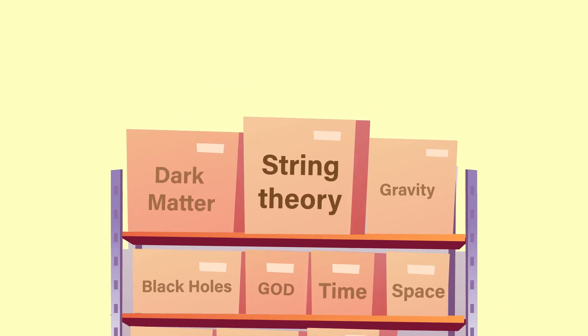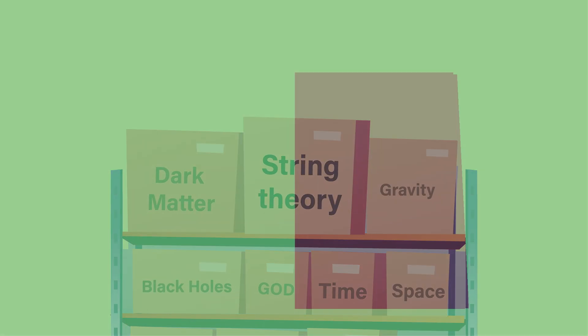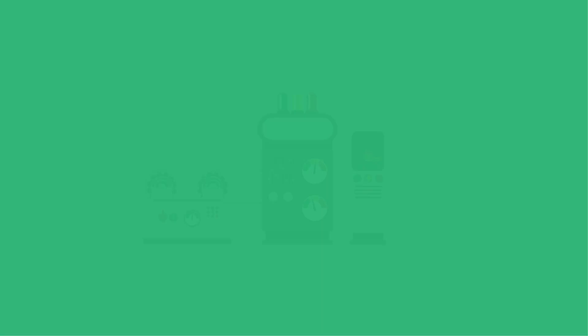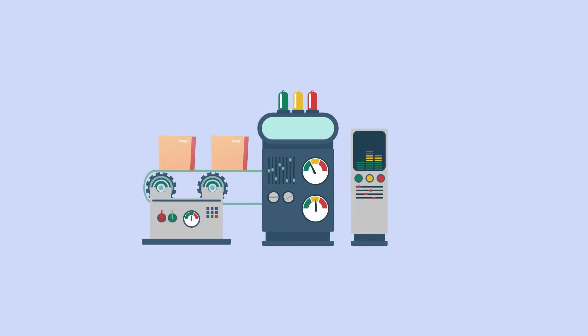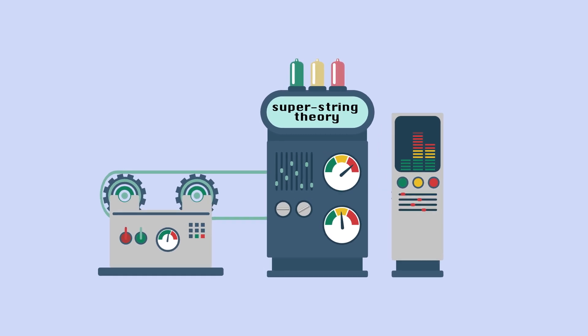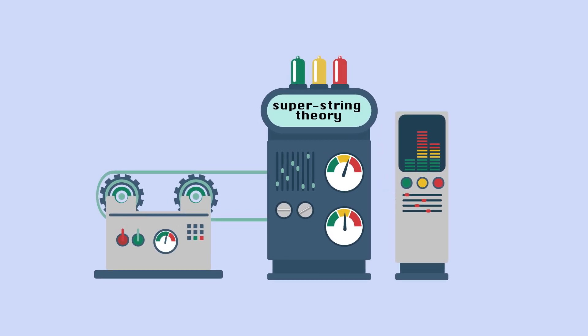Super String Theory. Super String Theory is a complex and highly controversial idea that looks to combine numerous theories all into one universal theory of everything. To better understand what Super String Theory is, we need to look at the fundamental forces of nature that Super String Theory looks to combine.